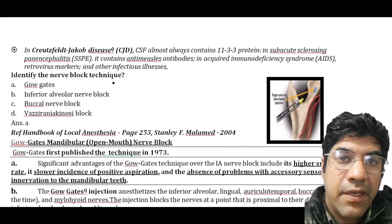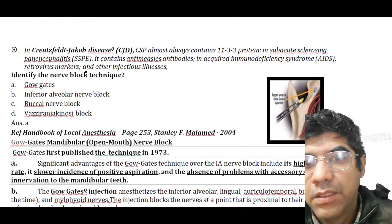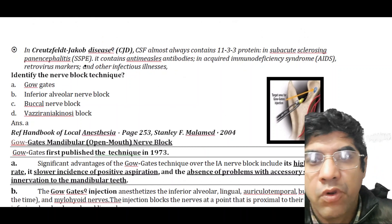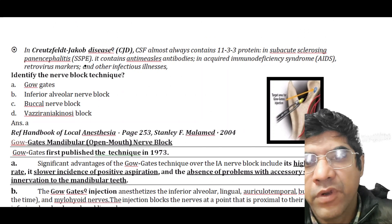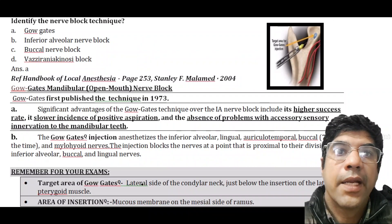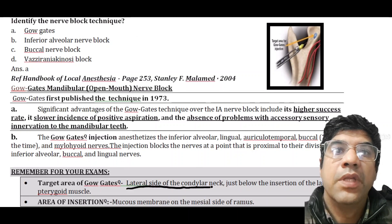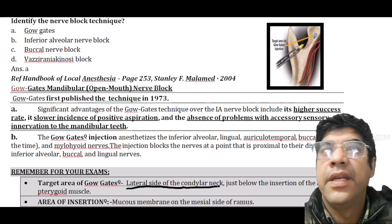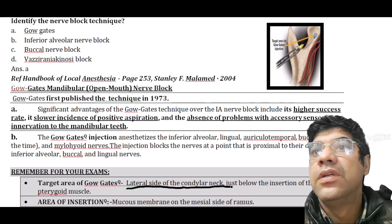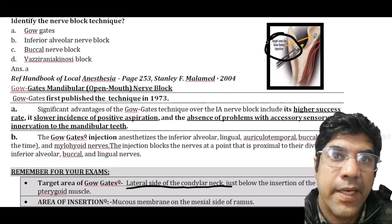Identify the nerve block technique — it is the Go-Gate technique. The Go-Gate technique is a method for mandibular anesthesia. The target area is the lateral side of the condylar neck, just below the insertion of the lateral pterygoid muscle.